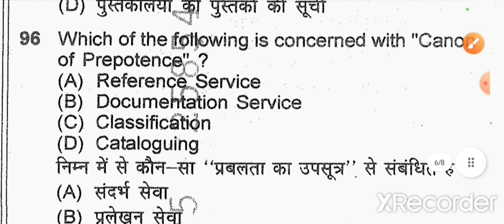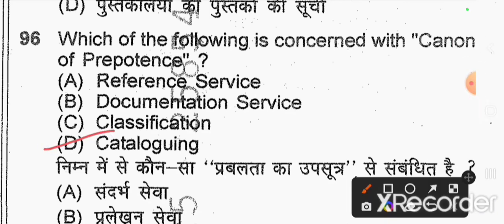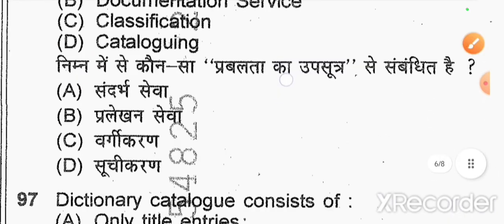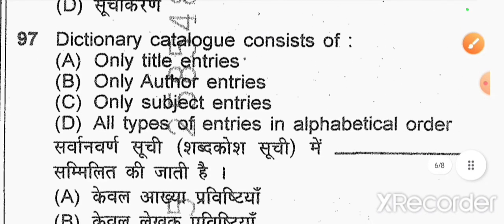Question number 96: which of the following is concerned with the canon of prepotence? Option D — cataloging. Question number 97: a dictionary catalog consists of — all types of entries in alphabetical order.